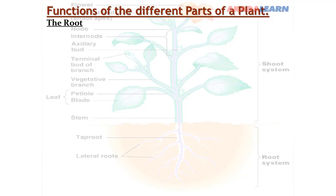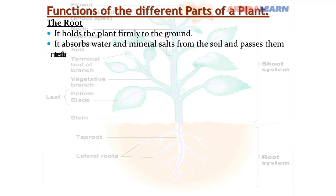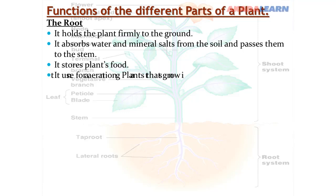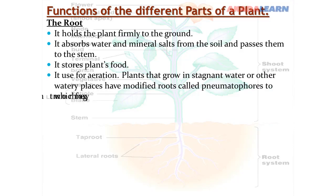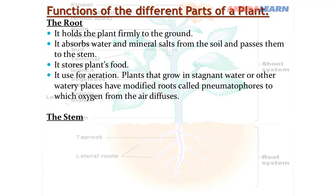The functions of the roots: the root holds the plant firmly to the ground. It absorbs water and mineral salts from the soil and passes them to the stem. The root stores plant food. It is also used for aeration — plants that grow in stagnant water and other watery places have modified roots called pneumatophores, through which oxygen from the air diffuses.